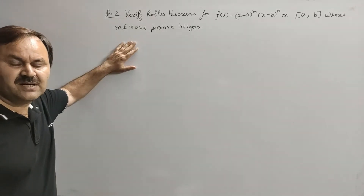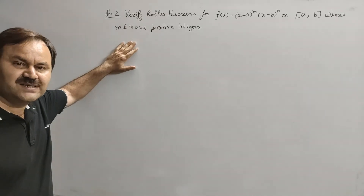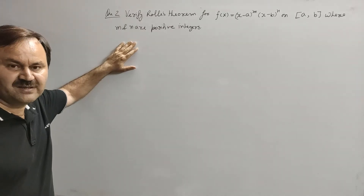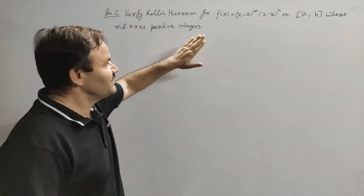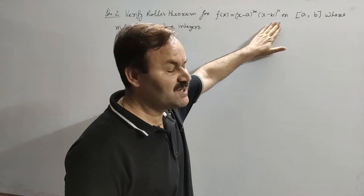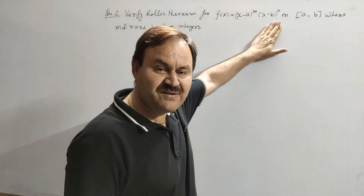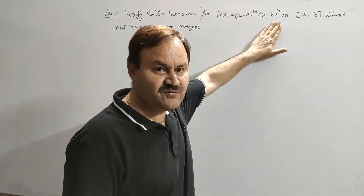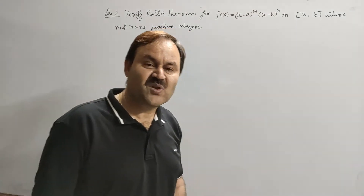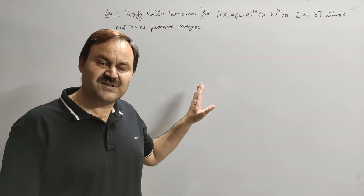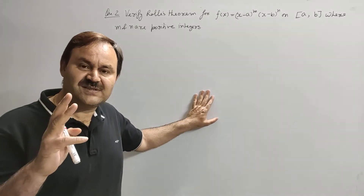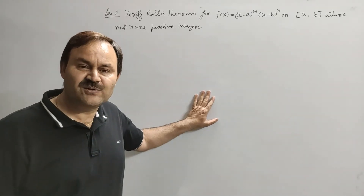Now we are taking one more example related to Rolle's theorem. In this example we will verify Rolle's theorem for a function on a given interval. The function here is f(x) = (x - a)^m · (x - b)^n, and we have to verify Rolle's theorem for this function on the closed interval [a, b]. To verify Rolle's theorem, we will first test the three conditions for applicability of Rolle's theorem.